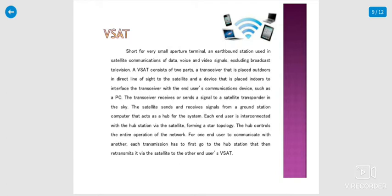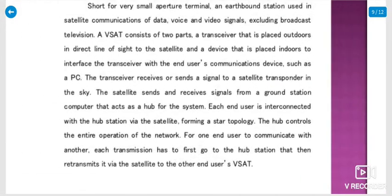Each and every user is interconnected with the hub station via satellite, forming a star topology. The hub controls the entire operations of the network. For one end user to communicate with another, each transmission has to first go to the hub station, which then re-transmits it via the satellite to the other end user of a VSAT.